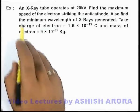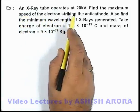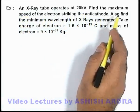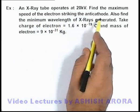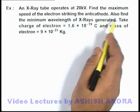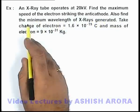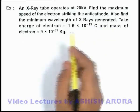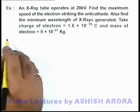In this example, an X-ray tube operates at 20 kilovolts. We are required to find the maximum speed of the electron striking the anticathode and the minimum wavelength of X-rays generated. The data for charge of electron and mass of electron is also given to us.